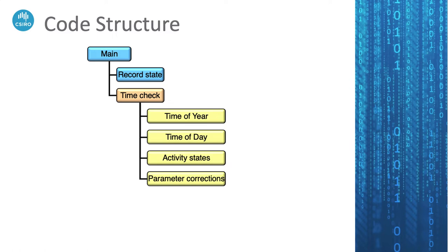At this point it also does any parameter scalings or corrections based on the ambient environment. Things like nutrient processes, metabolism, and similar processes are dependent on what the temperature, salinity, pH, oxygen, and other conditions are — you get different values under different states. Or if you've read in any scaling properties, like scaling natural mortality as part of a time series, all of those corrections happen at that point.